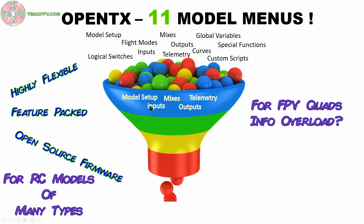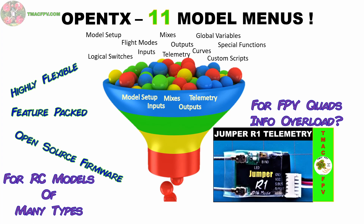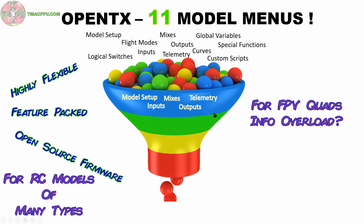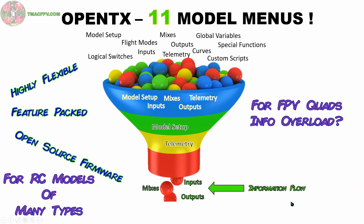Those five menus are Model Setup, Inputs, Mixes, Outputs, and Telemetry — if we're even using a full telemetry receiver such as the Jumper R1, FrSky RxSR, or a similar telemetry receiver. I've got product links in the description below for both the R1 and the RxSR. As you can see, we've already streamlined the use of OpenTX from 11 menu items down to five. We're just going to eat some of this candy a couple pieces at a time.